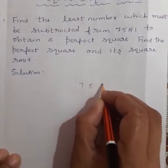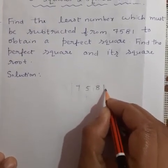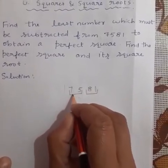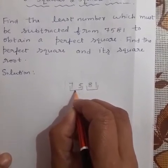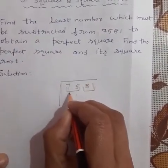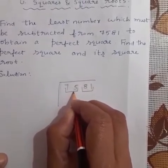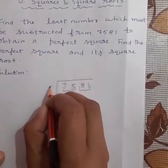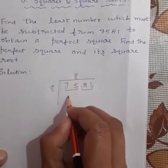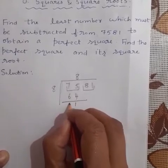Let's write the number here first. Try to make the pairs from the ones digit. Our first pair from the extreme left is equal to 75. We know that the square number just less than 75 is equal to 64, and 64 is the square of 8. So our divisor as well as quotient here is 8. Multiply: 8 times 8 is 64. Find the remainder, that is equal to 11.